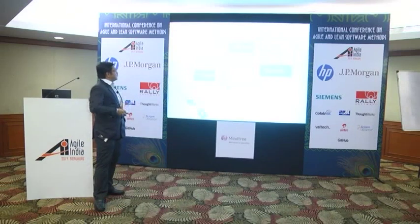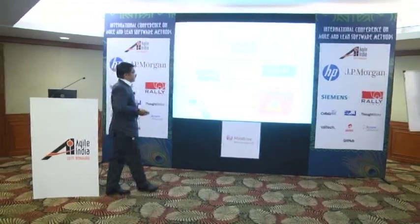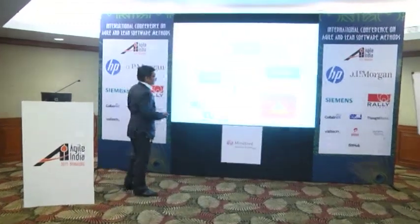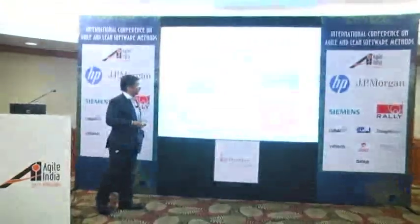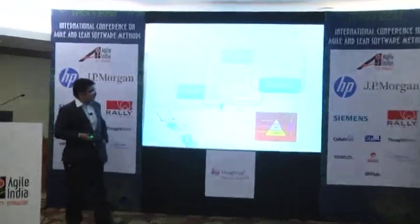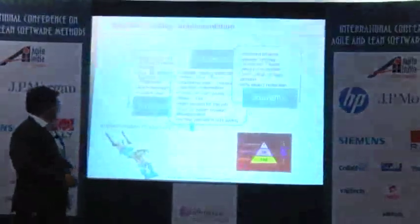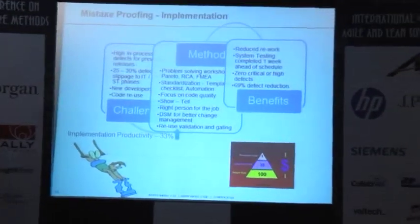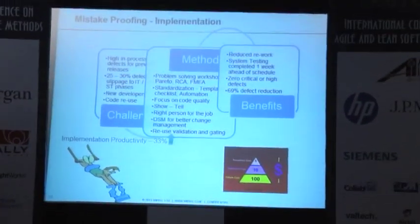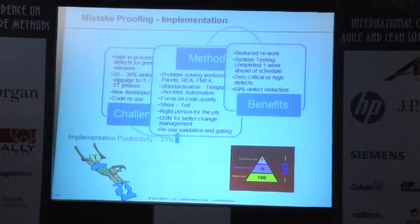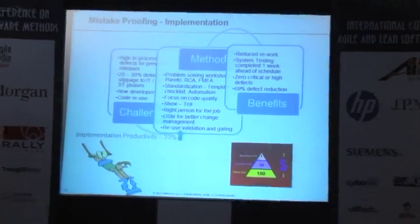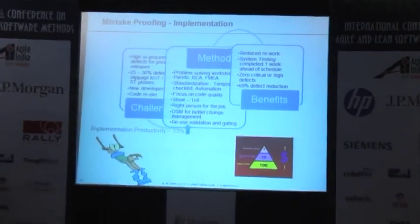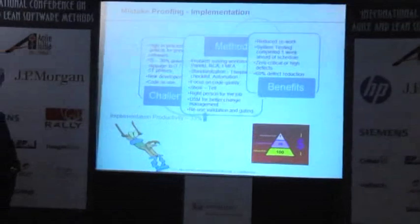Implementation productivity improved by 33%. The prevention cost pyramid illustrates that failure cost can be a hundred times more than prevention cost. It is better to focus on prevention rather than allowing the failure to happen.